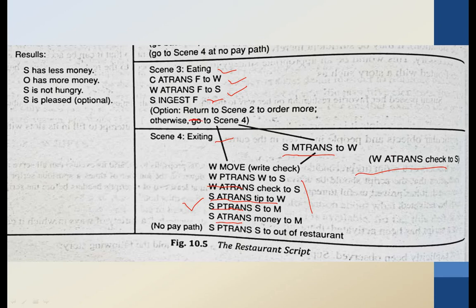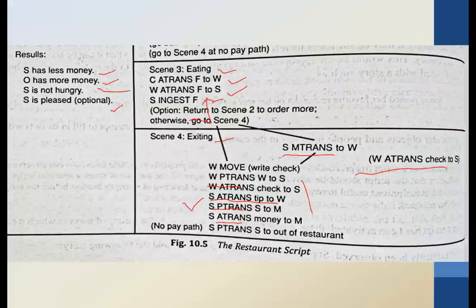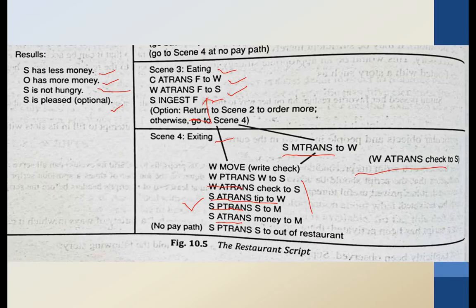The results of this script are: S has less money, the owner has more money, S is not hungry, and S is pleased (optional). These are the results occurring for the restaurant script, which has four scenes: entering, ordering, eating, and exiting. The scenes are described using primitives like P-trans, attend, M-build, and move — the same conceptual dependency primitives used earlier.